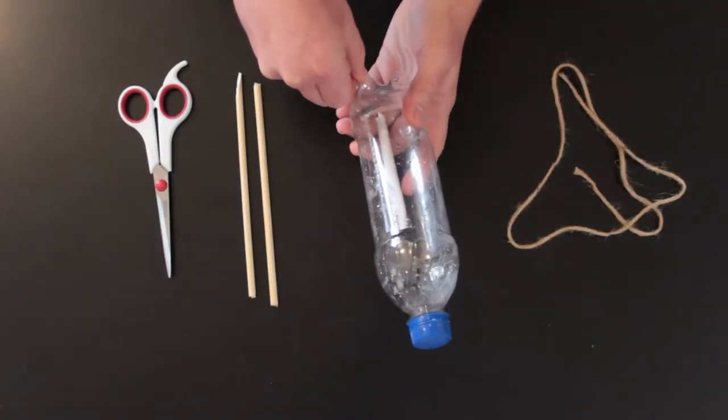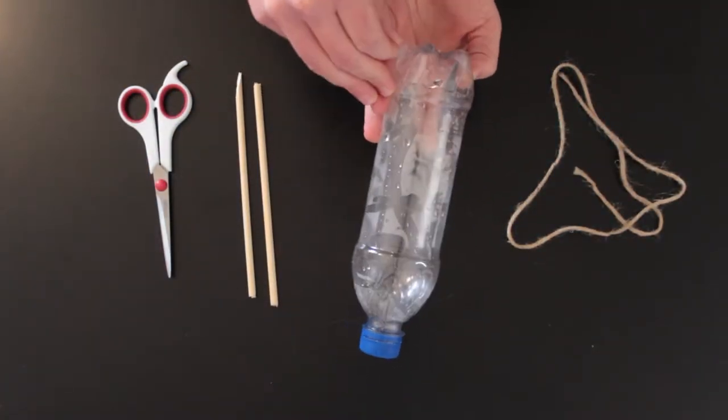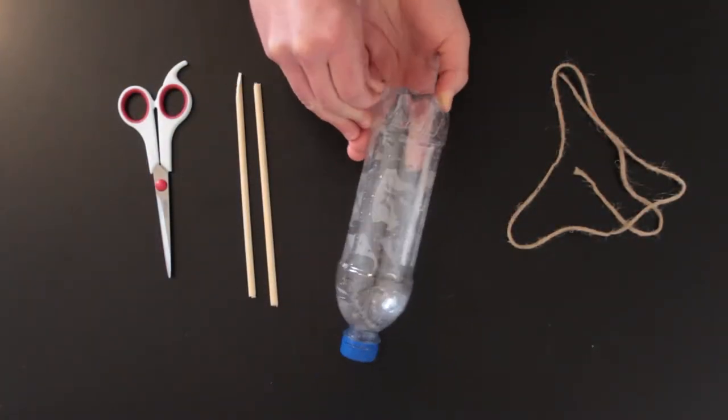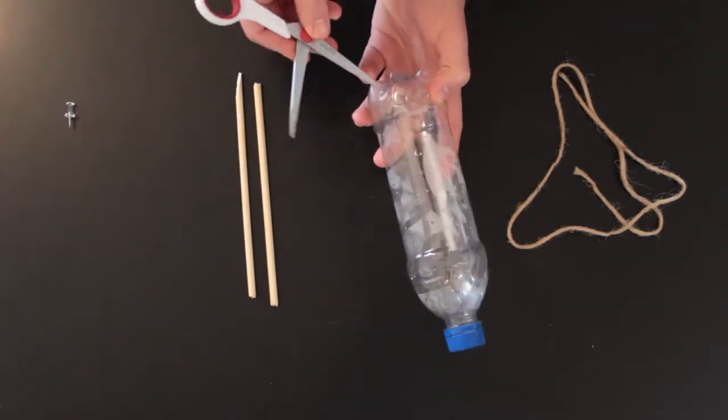Let's go over to the table and we'll try it out. First, we are going to add perches for the birds to land on. Using the push pin, poke two holes on opposite sides at the bottom of the bottle.